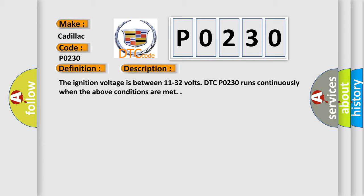The ignition voltage is between 11 to 32 volts. DTC P0230 runs continuously when the above conditions are met.